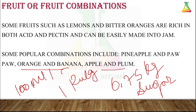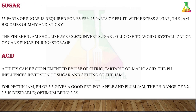For pear jam, it is 0.75 kg of sugar, 1.5 grams of citric acid, and 100 ml of water. For some jams like plum jam, citric acid is not used. Generally, 55 parts of sugar are required for every 45 parts of fruit. With excess sugar, the jam becomes gummy and sticky. The sugar used is invert sugar.